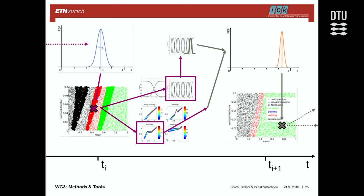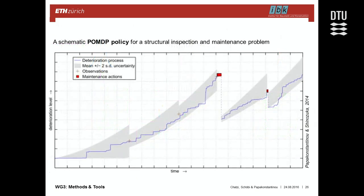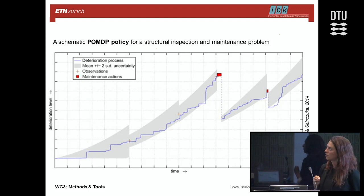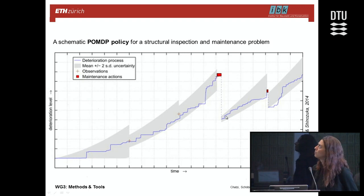This is an overly simplified example, but the methodology can be extended to account for higher dimensions of states and diverse types of observations and components to be inspected. If you consider a component undergoing deterioration over time and have a stochastic model of the transition, without any observation you would make decisions based on a rough estimate. Once an observation is obtained, depending on the accuracy of the method, you can redefine your confidence in the system state and act at the point in time where it is needed.